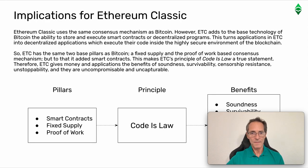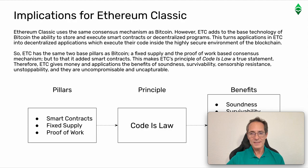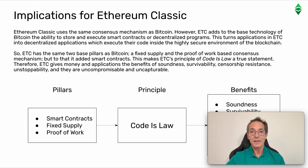Implications for Ethereum Classic. Ethereum Classic uses the same consensus mechanism as Bitcoin. However, ETC adds to the base technology of Bitcoin the ability to store and execute smart contracts, or decentralized programs. This turns applications in ETC into decentralized applications, which execute their code inside the highly secure environment of the blockchain. ETC has the same two base pillars as Bitcoin — a fixed supply and proof-of-work-based consensus mechanism — but to that it added smart contracts. This makes ETC's principle of 'code is law' a true statement.